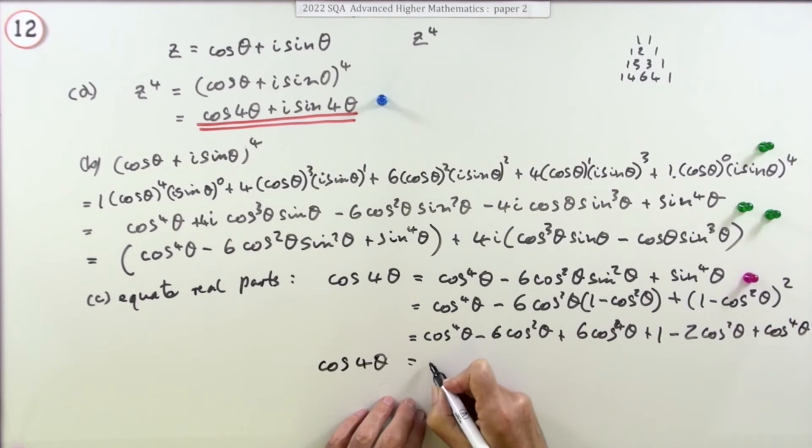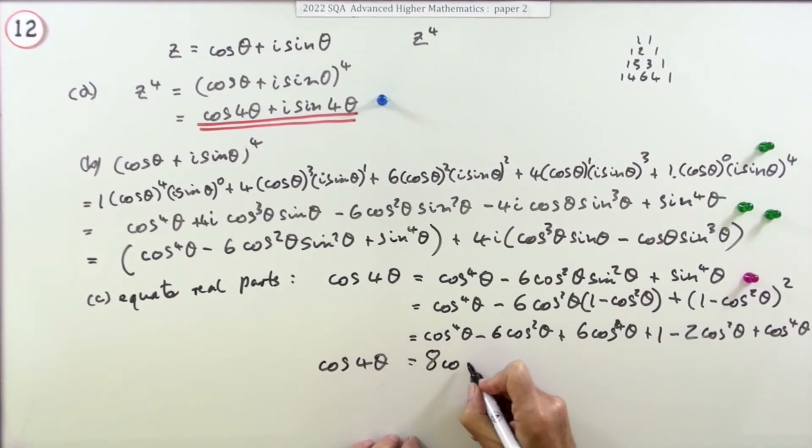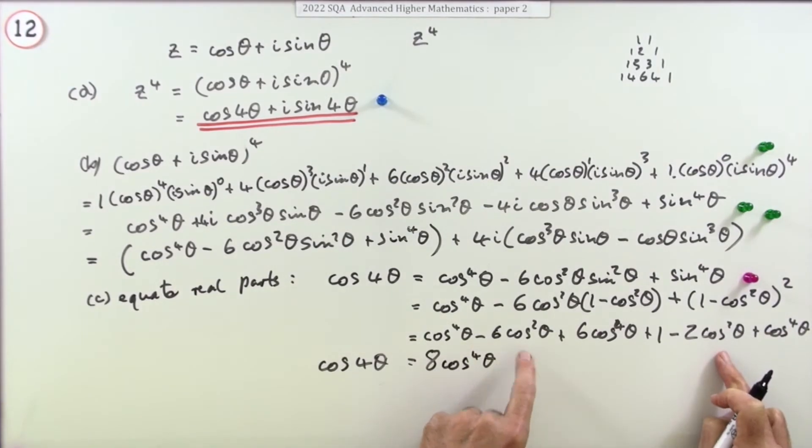So cos to the 4 theta will be, we've got many cos to the 4s, we've got 1, 2, and 6 is 8, that was what was required. How many cos squareds have we got? We've got minus 6 minus 2, that's minus 8. And then apart from that we've got a plus 1. That gets the last mark.